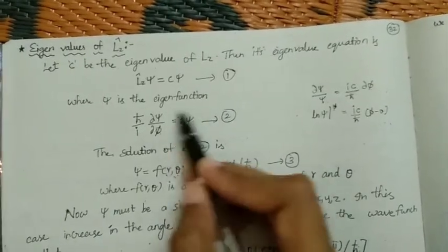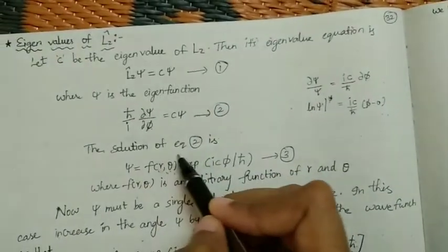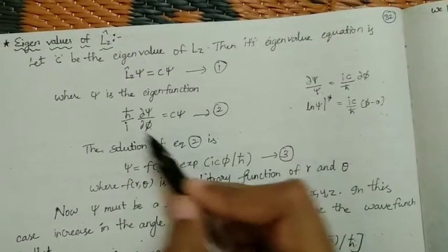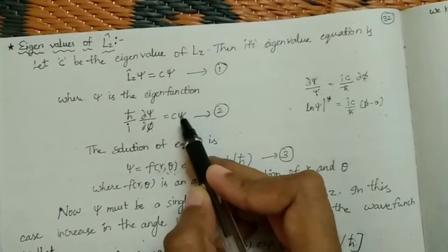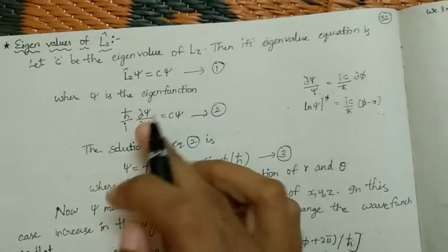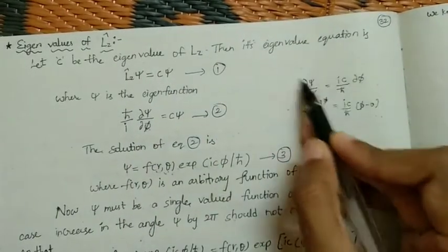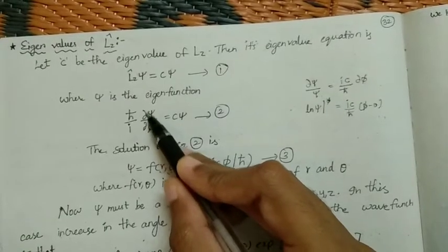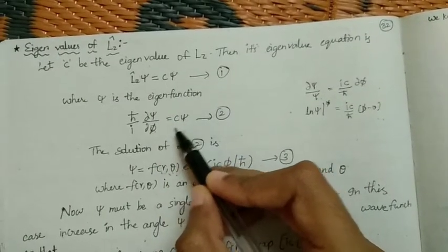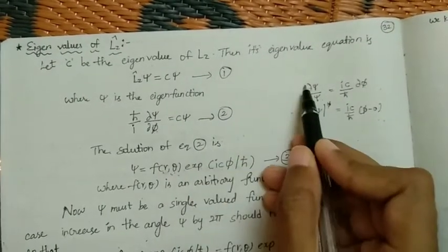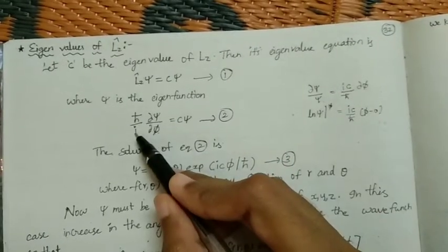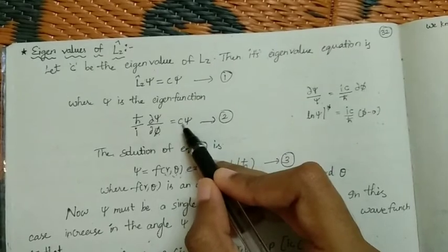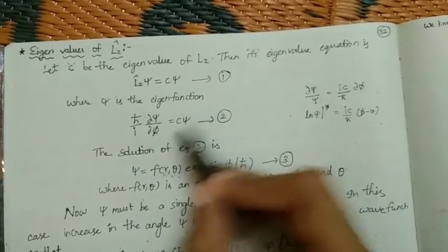This is our equation to solve. We take all xi terms to one side and phi terms to the other side. We get d-xi over xi, and moving the constants gives us i-C over h-bar on the phi side.